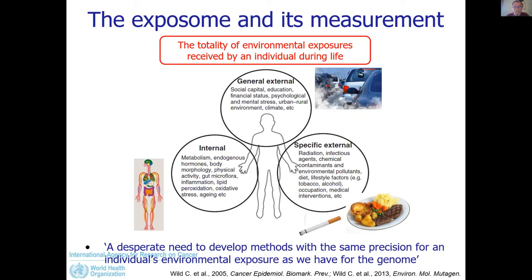such as social capital, education, and so on. There can be specific external exposure like smoking or diet, and there can also be internal exposure related to metabolism. Chris Wild made the important statement that we have a desperate need to develop methods with the same precision for individual environmental exposure as we have for the genome.